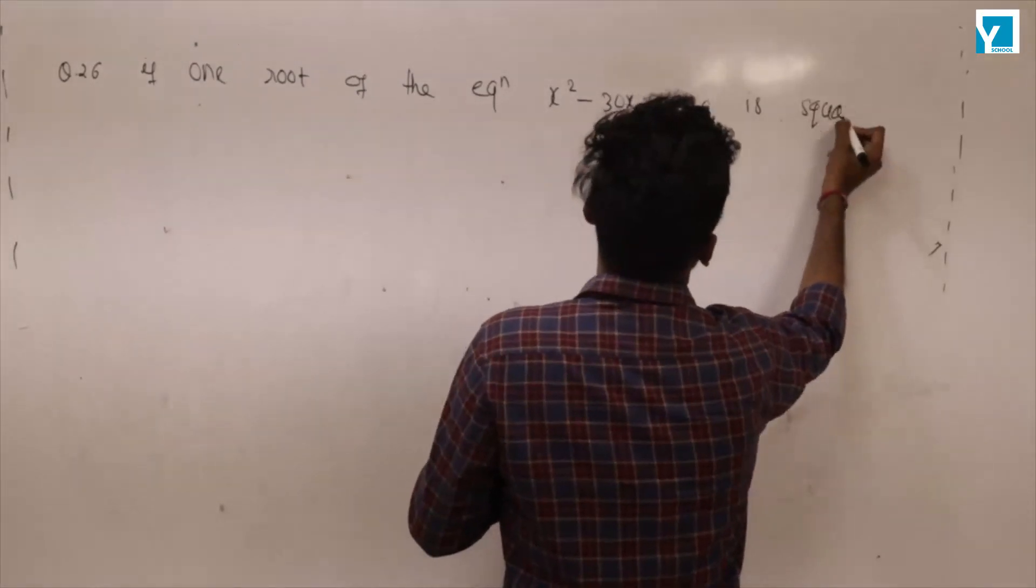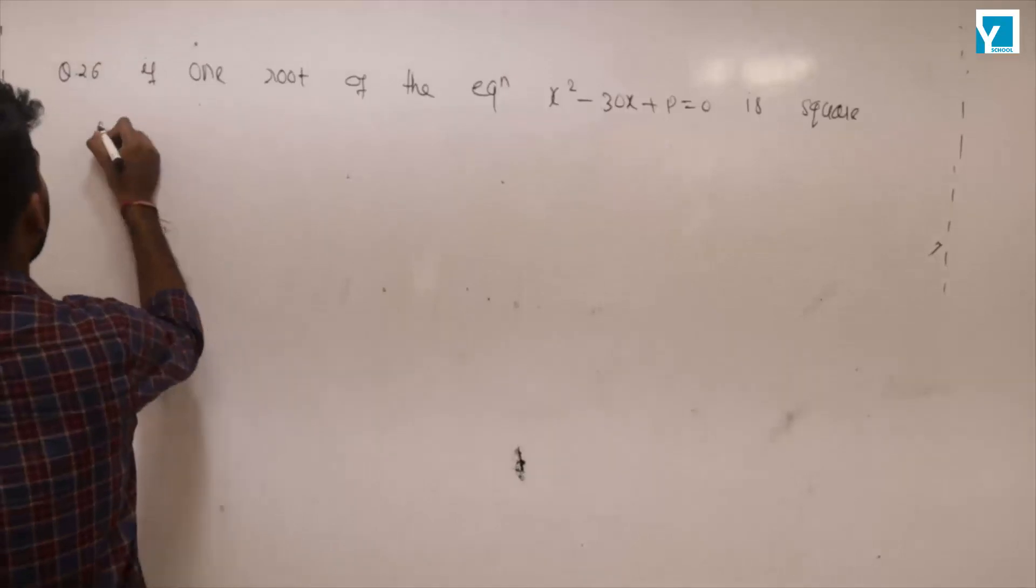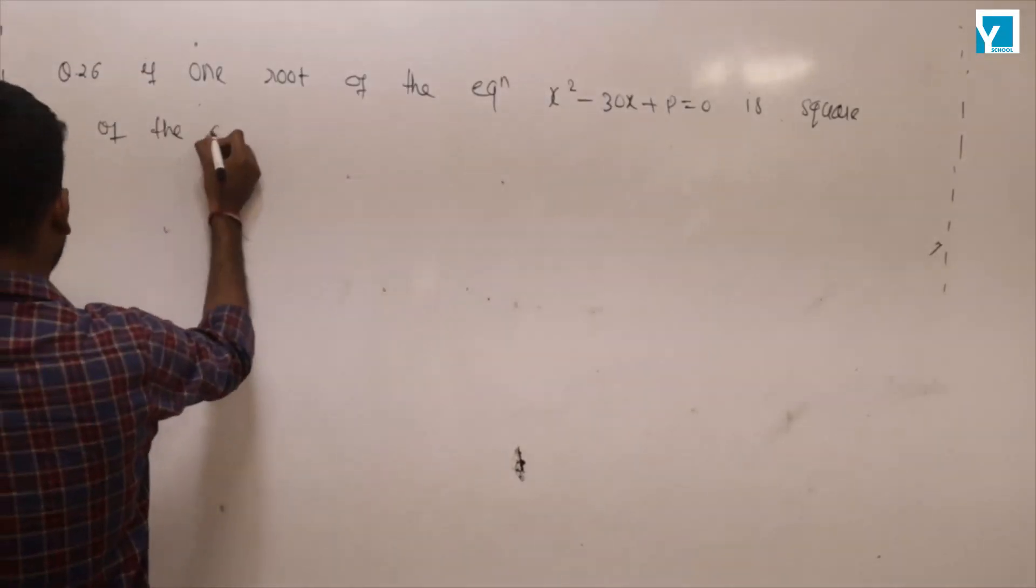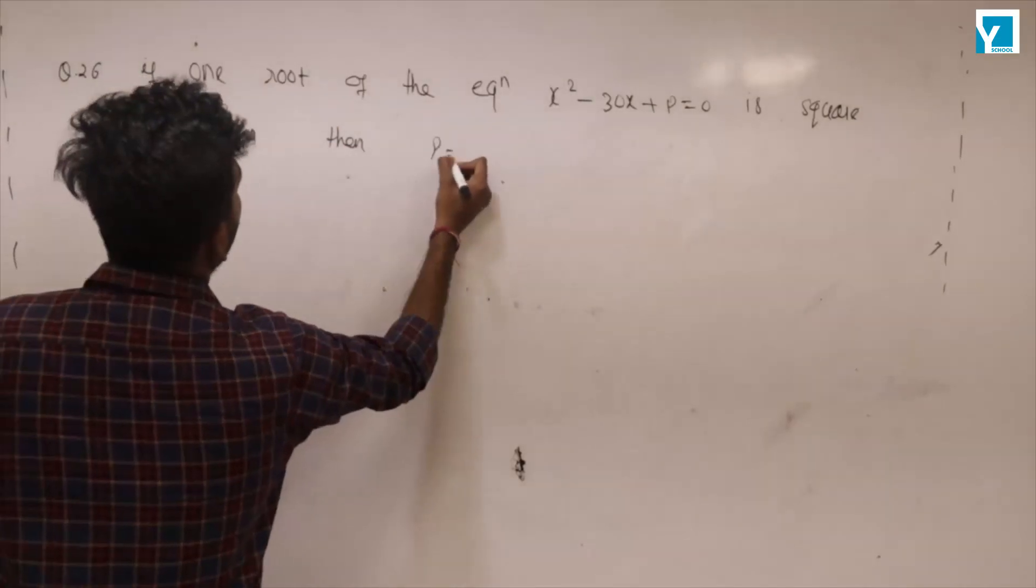is square of the other, then p equal to, we need to find. What does the question mean?